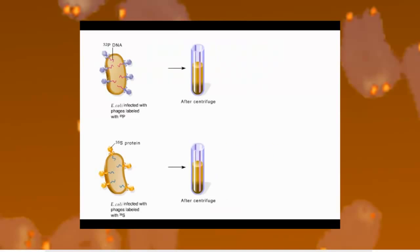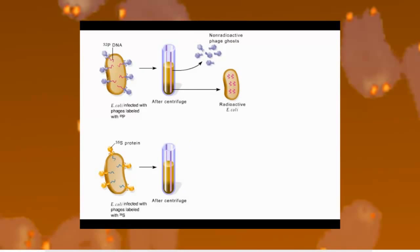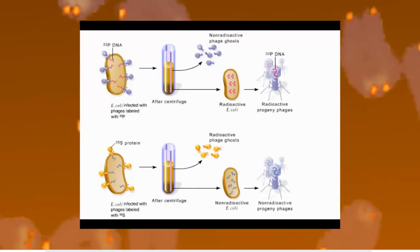The scientists discovered that the labeled DNA appeared in the host cell but not the phage ghosts, while the labeled proteins appeared in the phage ghosts but not the host cell. In addition, the progeny of the T2 with labeled DNA were radioactive, while the progeny of the T2 with labeled proteins were not radioactive.